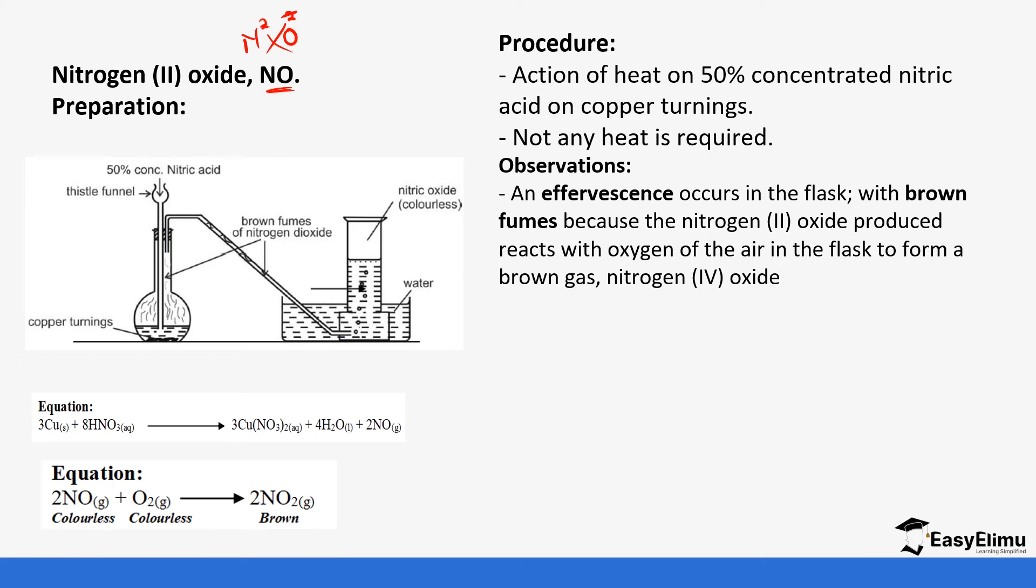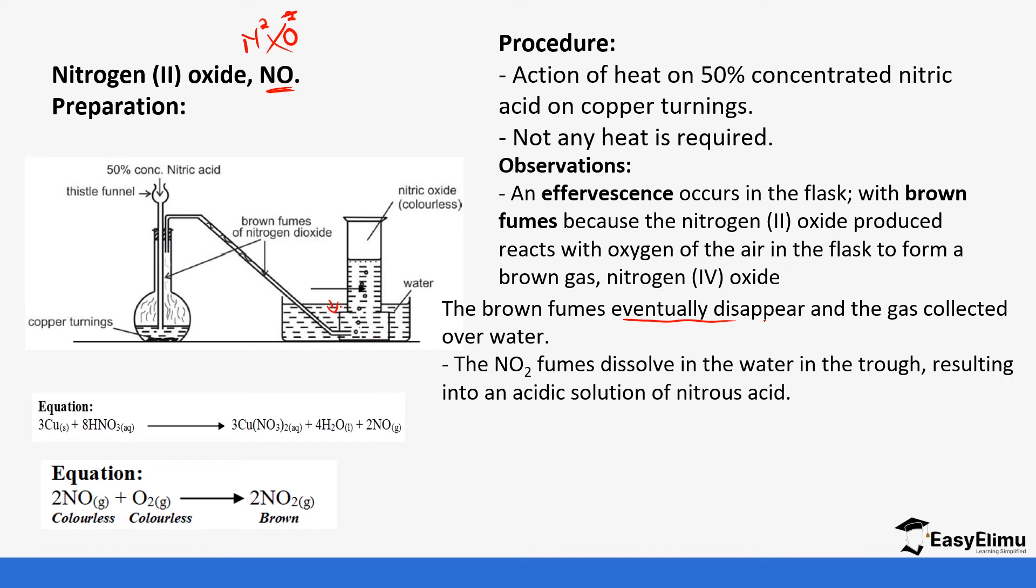Nitrogen (II) oxide reacts with oxygen to form nitrogen (IV) oxide. The brown fumes eventually disappear because when they are moved through the tube and come over water, the nitrogen (IV) oxide is very soluble in water and dissolves to form an acidic solution. The nitrogen (IV) oxide fumes result in the water in the trough forming an acidic solution of nitrous acid. The residue in the flask is a green solution of copper (II) nitrate. We have identified three observations: the effervescence, production of brown fumes, and the green solution left in the flask.